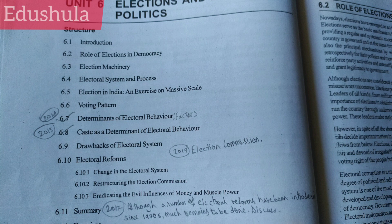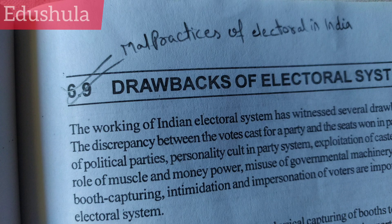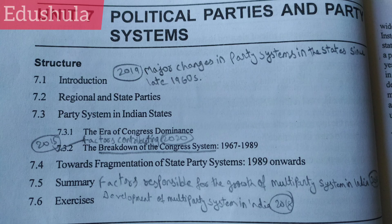Election Commission. Although a number of electoral reforms have been introduced since the 1970s, much remains to be done. Discuss. Malpractices of Electoral processes in India. From Unit 7: Major changes in party systems in the states since the late 1960s.